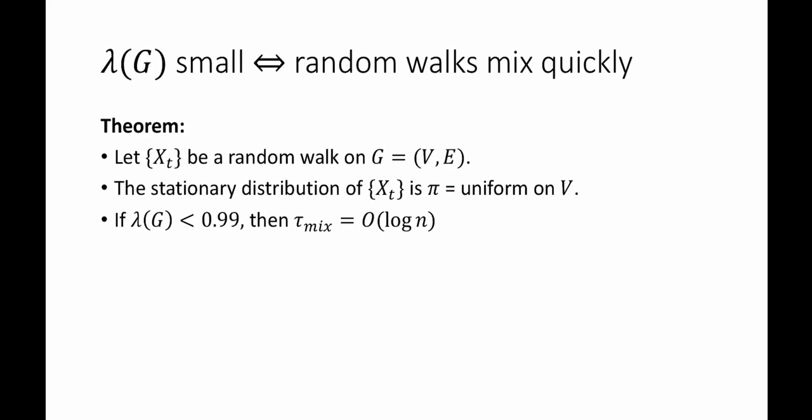So why do we define an expander graph that way? The reason is that, as we'll prove shortly, if lambda of G is small, then random walks mix quickly. More formally, we have the following theorem.